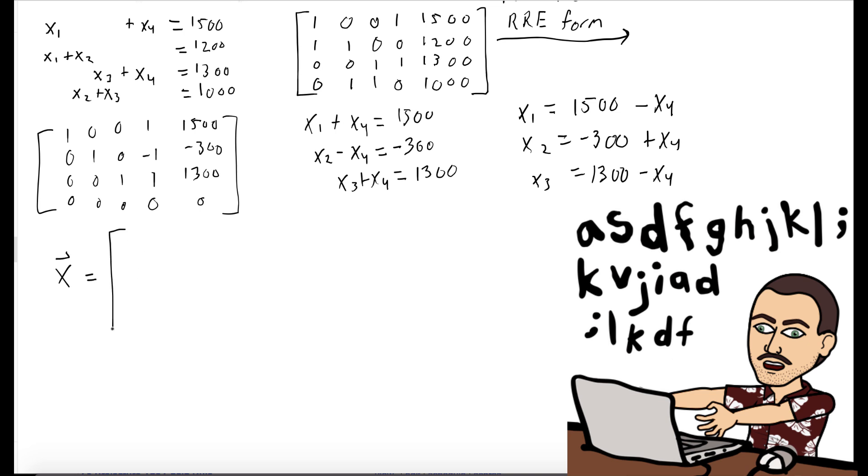So our solution x is as follows. And now we can break this vector up into the constant terms, which is 1500 minus 300, 1300, and 0, plus x4 times the coefficients of x4.